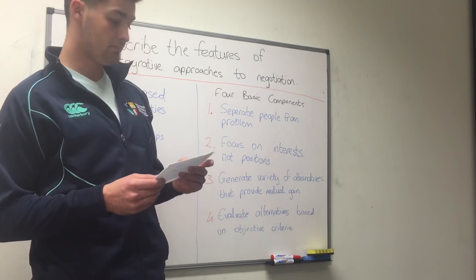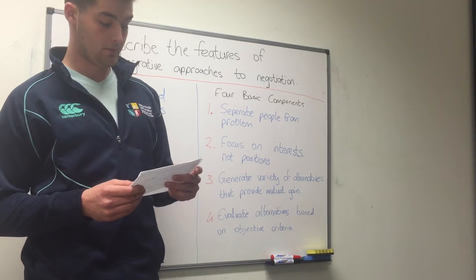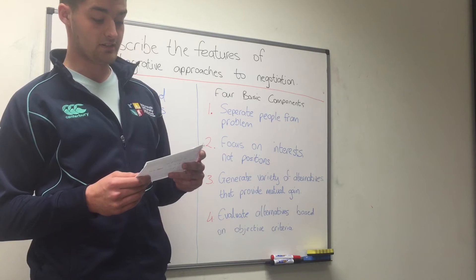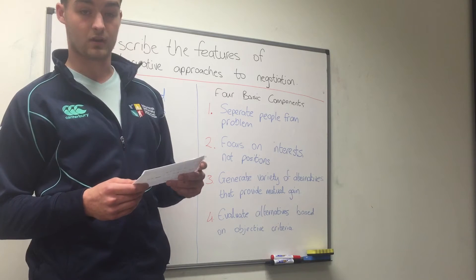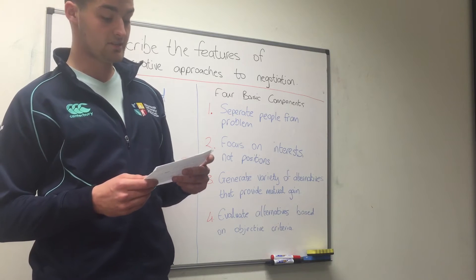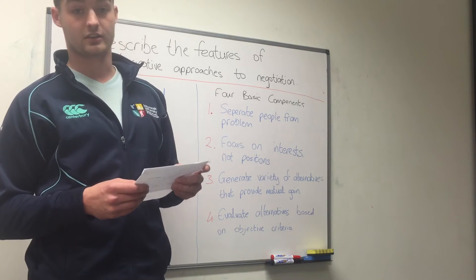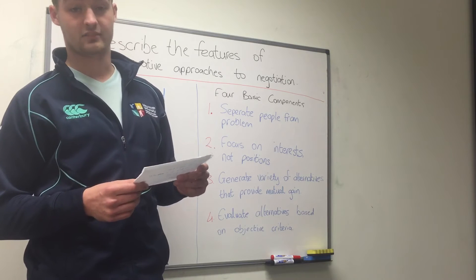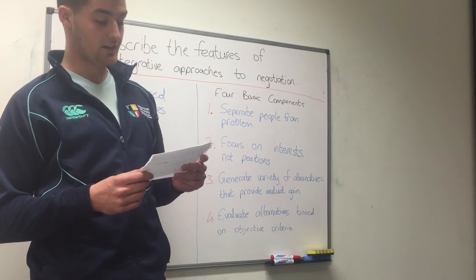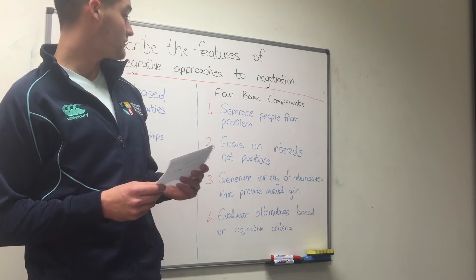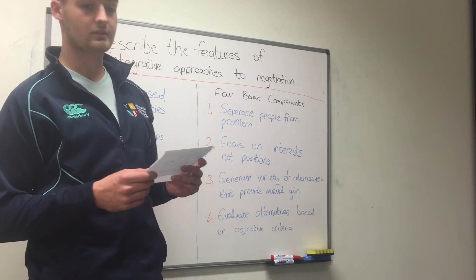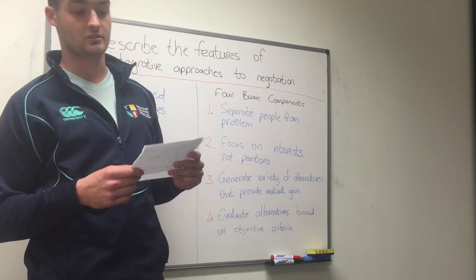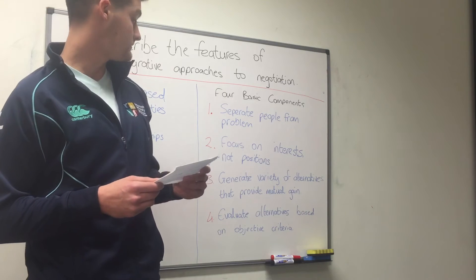For the first component, separating people from the problem, Fisher and Ury basically say that parties emotionally get attached to the problem and that miscommunication can lead to hurt feelings, a downward spiral, and this can negatively impact negotiation. People may have an ongoing relationship, so in order to have a successful negotiation you should detach the people from the problems.